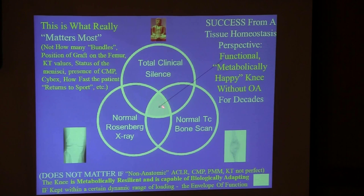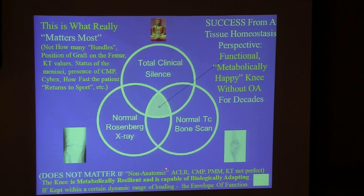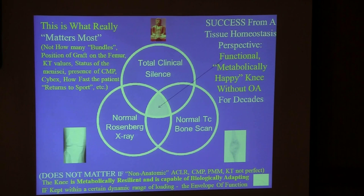If you put them all together — total clinical silence, normal bone scan, normal x-ray — as I stand before you, I am one of these people. This is success from a tissue homeostasis perspective: a metabolically happy knee without OA for decades, we hope. Therefore, it does not matter if an ACL reconstruction is not anatomic — my ACL reconstructions are not anatomic and not double bundle, but you don't need double bundle.